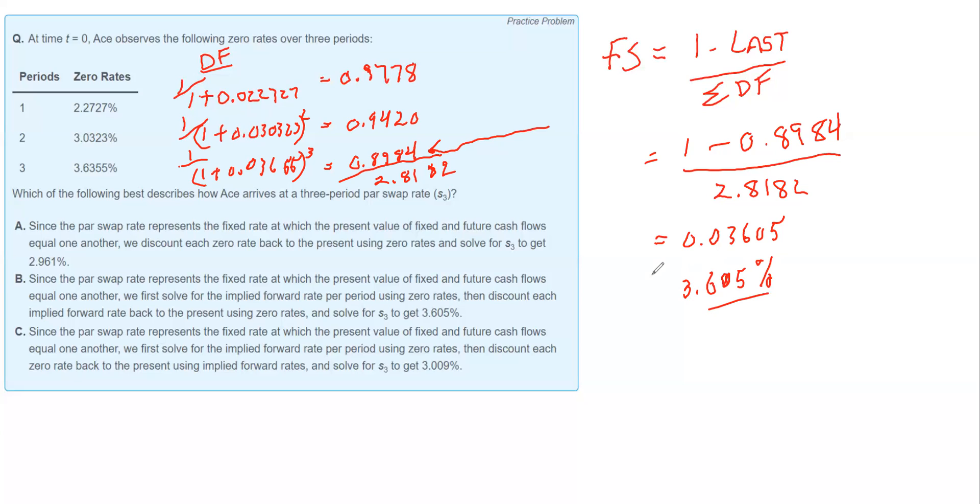Okay, there it is. So now we can look at our answers. We can eliminate choice A because it's saying 2.961. Choice B looks like it's correct, 3.605. And we can get rid of choice C because it's saying 3.09. There it is.